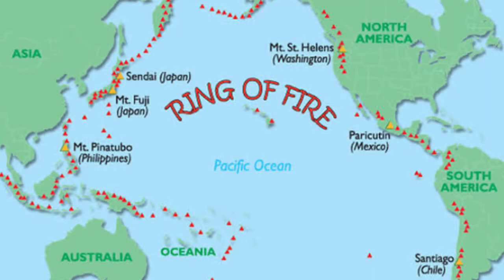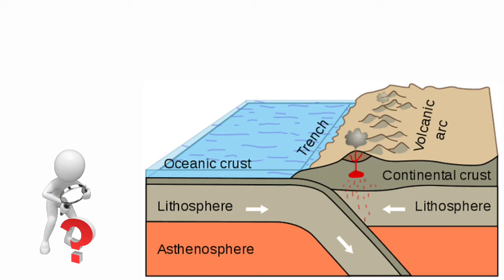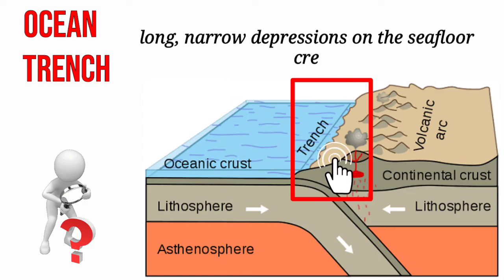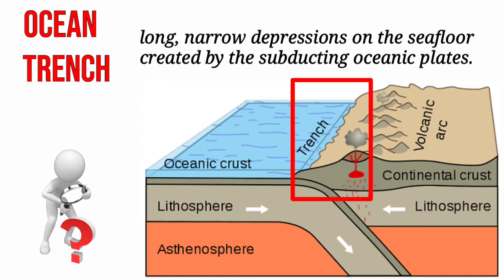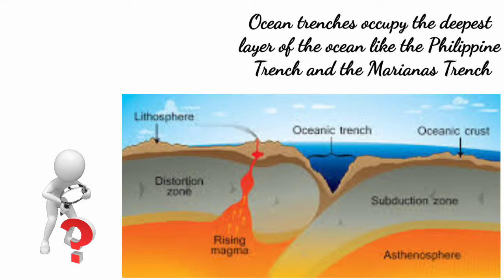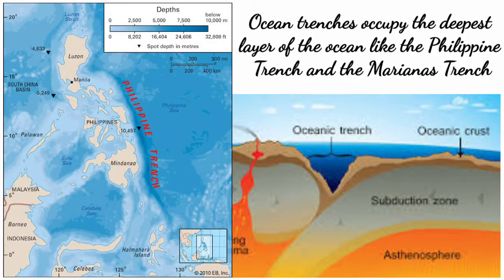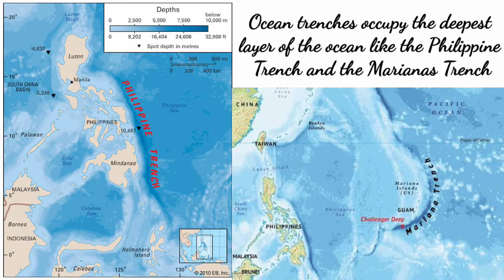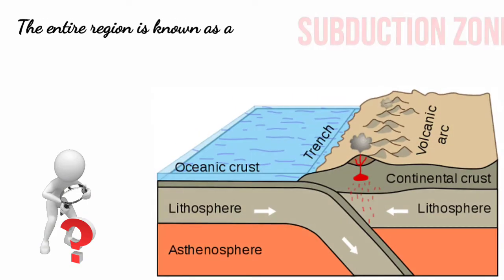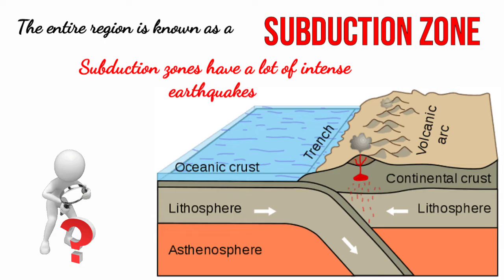This is why most surface volcanoes are found near the edge of a continental leading plate, and also the reason why most of the active volcanoes in the world are located along the plate boundaries. Another geologic feature formed by the subduction process is ocean trenches — long, narrow depressions on the seafloor created by the subducting oceanic plates. Ocean trenches occupy the deepest layers of the ocean, like the Philippine Trench and the Marianas Trench. This entire region is known as a subduction zone.